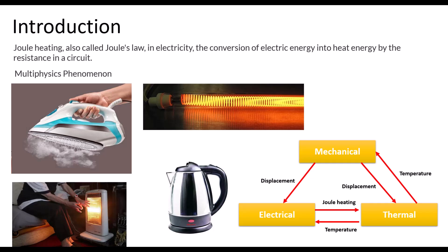For Joule Heating, the simplest case is that the electrical solver solves Maxwell's equation and gives the Joule Heating. This Joule Heating is used as an input to the heat equation, and the thermal solver predicts the temperature developed inside the product. Finally, this temperature is used to predict the deformation or mechanical stress generated inside the product. Things become complex when one physics starts affecting another — for example, if electric properties are a function of temperature, we need to solve the problem in a coupled way. If one physics does not significantly affect another, we can solve it as a one-way coupled problem.